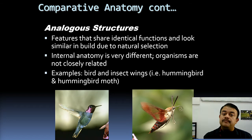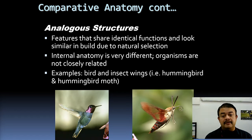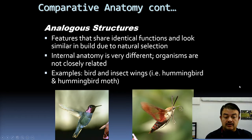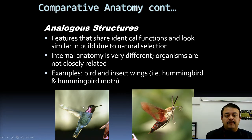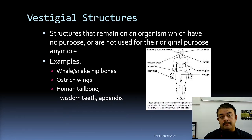Analogous structures are quite different: they have identical functions and may look similar externally, but are internally very different — like bird wings and insect wings. For example, the hummingbird and the hummingbird moth: one is an insect while the other is an avian species, yet they look remarkably similar.